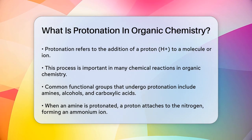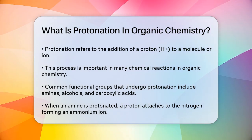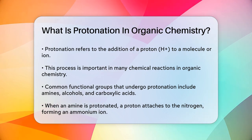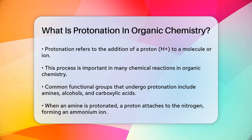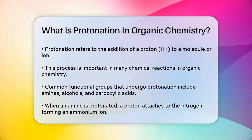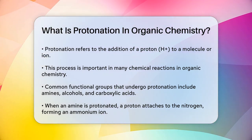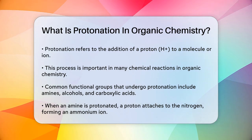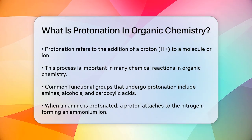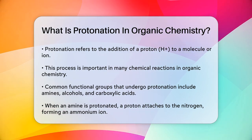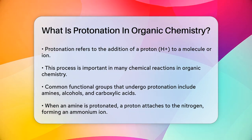This process is a key part of many chemical reactions, especially in organic chemistry. Protonation often happens on specific functional groups like amines, alcohols, and carboxylic acids. For instance, when an amine gets protonated, a proton attaches to the nitrogen atom, forming an ammonium ion. This can significantly affect the solubility, reactivity, and overall behavior of the molecule.